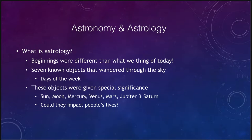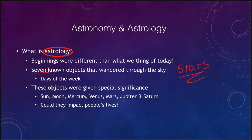Starting off, let's look at some of the basics. What do we mean by astronomy and astrology? Astrology is the study of the different objects that wandered through the sky. There were seven known objects that wandered through the sky, separate from the stars. The stars always retained their same positions relative to each other, so the constellations we saw were always exactly the same. However, there were seven objects that wandered through these, and these gave us our days of the week.